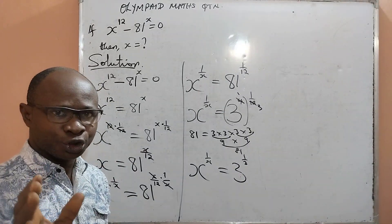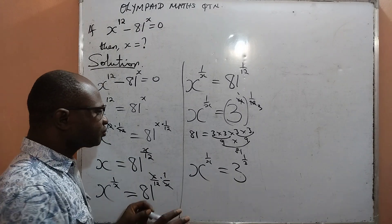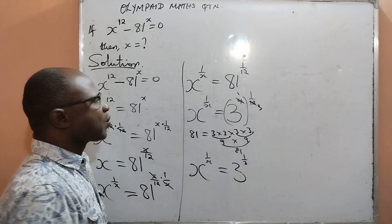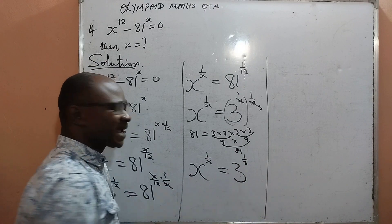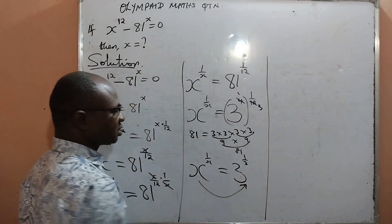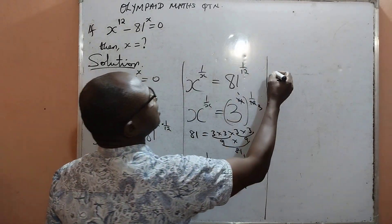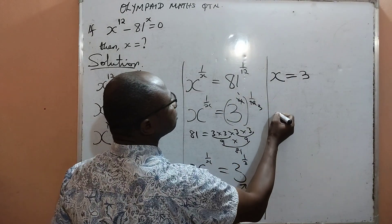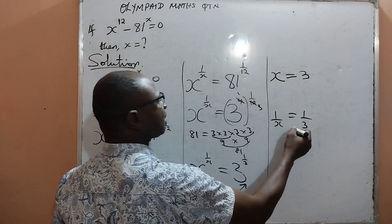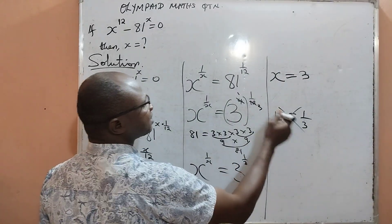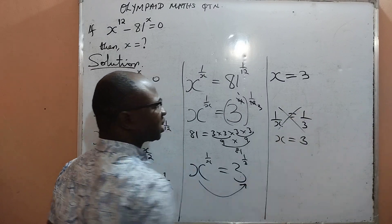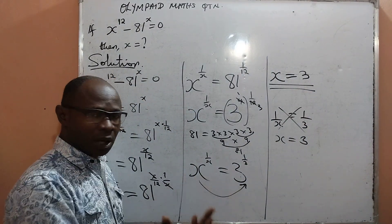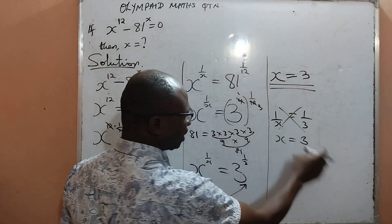At this point, look very carefully — you will discover that we have some similarities. The bases look alike and the powers also look alike. We are now going to compare the bases and the powers. Comparing the bases, x is equal to 3. Comparing the powers, 1 over x equals 1 over 3, which by cross multiplication gives x equal to 3. In conclusion, the value of x is equal to 3 whether we compare the bases or the powers.